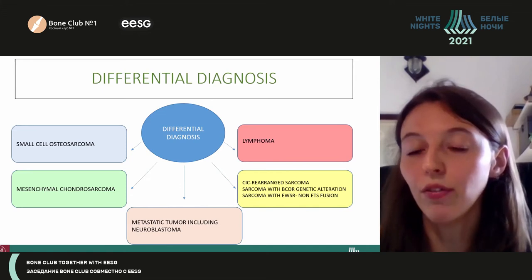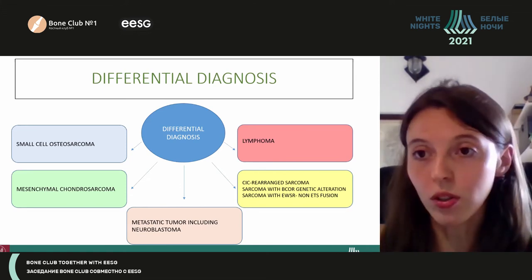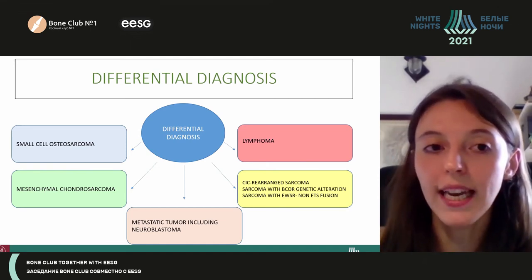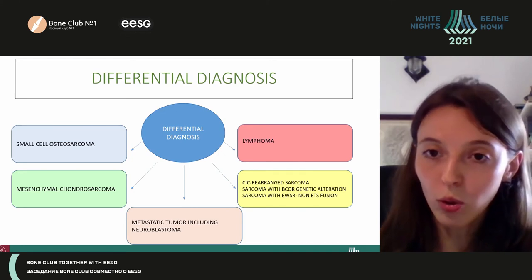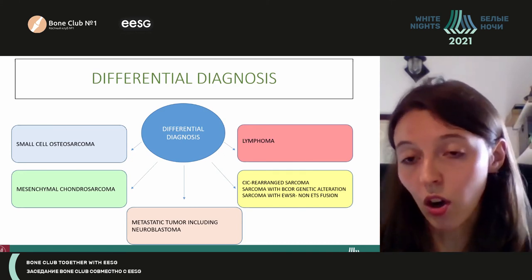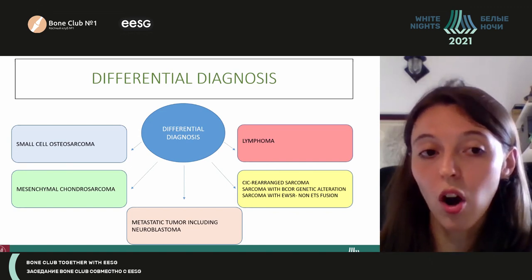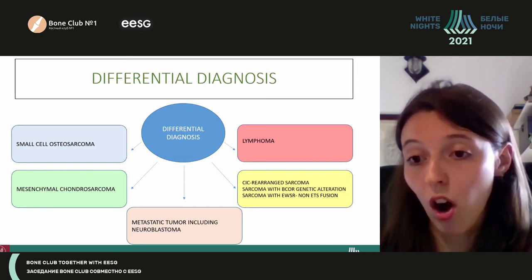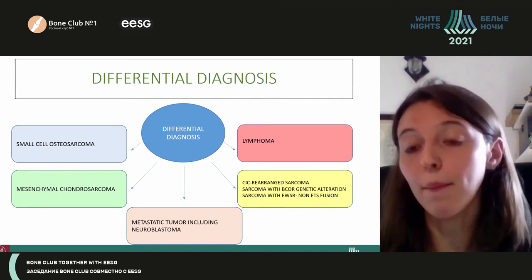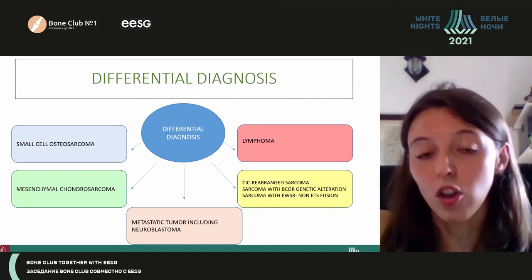The main differential diagnoses to keep in mind, considering age and localisation, are lymphoma, CIC sarcoma, small cell osteosarcoma, and mesenchymal chondrosarcoma. If we have a young child, we should not forget about the possibility of metastatic neuroblastoma.